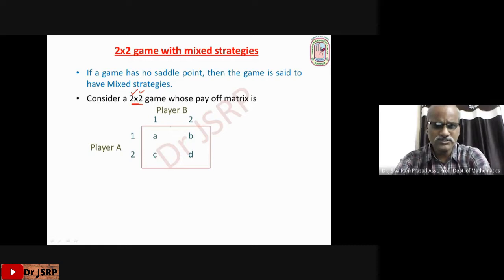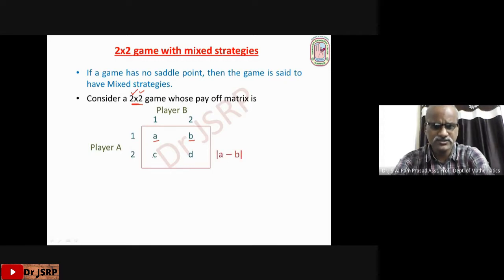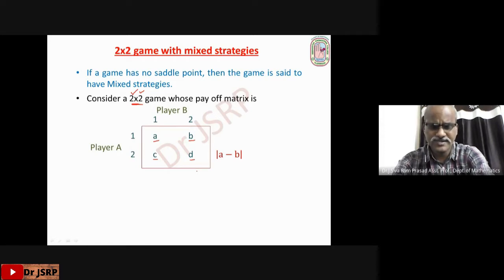How to solve this 2x2 game? First, write the difference of the first row: A minus B. Take its absolute value, that is |A − B|. Write it opposite to the second row. Next, take the difference of the second row: C minus D. Take its absolute value, |C − D|. Write it opposite to the first row.